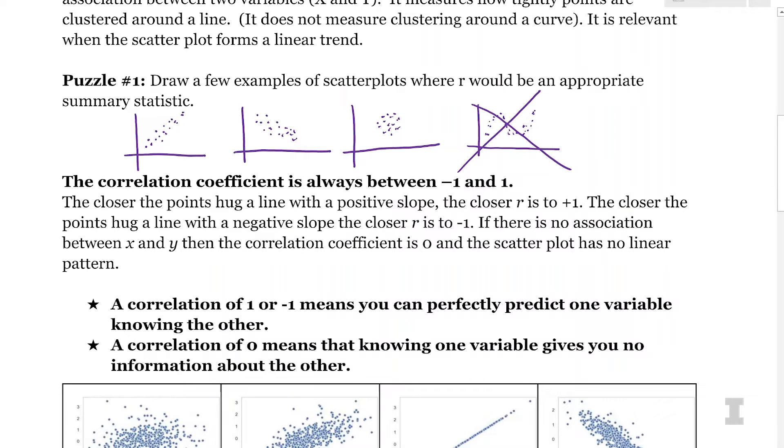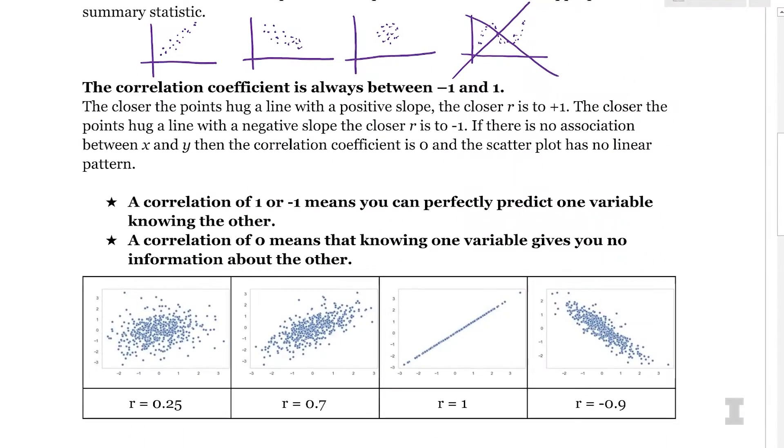So the deal with one and negative one, we call those perfect correlations. The closer the points hug a line with a positive slope, the closer r is to one. And then the closer the points hug a line with the negative slope, the closer r is to negative one. So basically what we see, if we want to think about a perfect correlation of one, we would see all of our points in an exact straight line with a positive slope, something like this. This would be a perfect correlation. A negative correlation of negative one would be the exact same thing. The points form a perfect line, except it has a negative slope. So those are kind of the two extremes of the correlation coefficient.